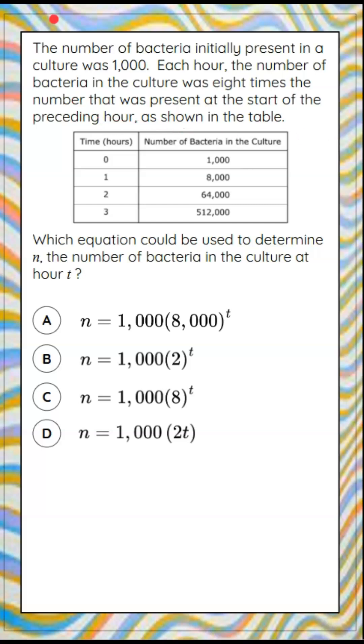Here's our question. We're told that the number of bacteria initially present in a culture was 1,000. Each hour, the number of bacteria in the culture was eight times the number that was present at the start of the preceding hour, as shown here in the table.